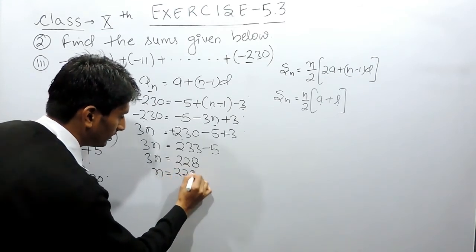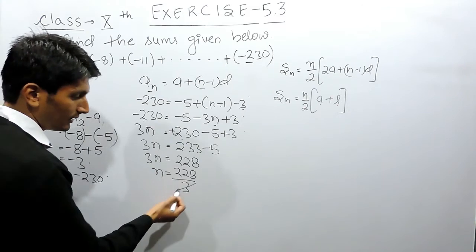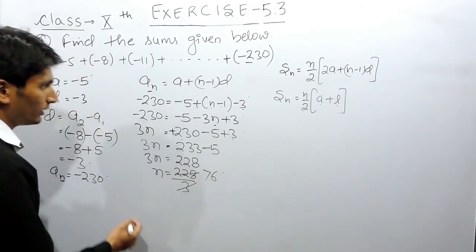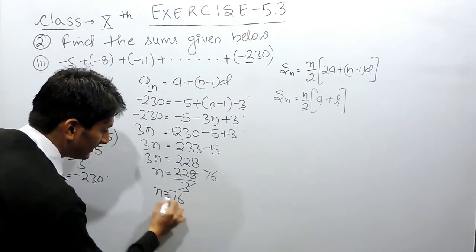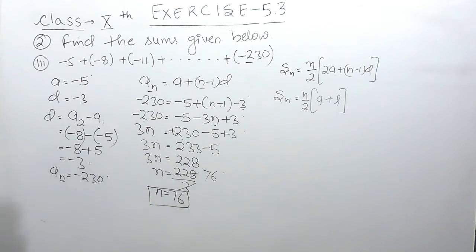Now we have to find the value of n. For that, we have to divide 228 by 3, and this gives us 76. So here there are 76 terms in this AP.